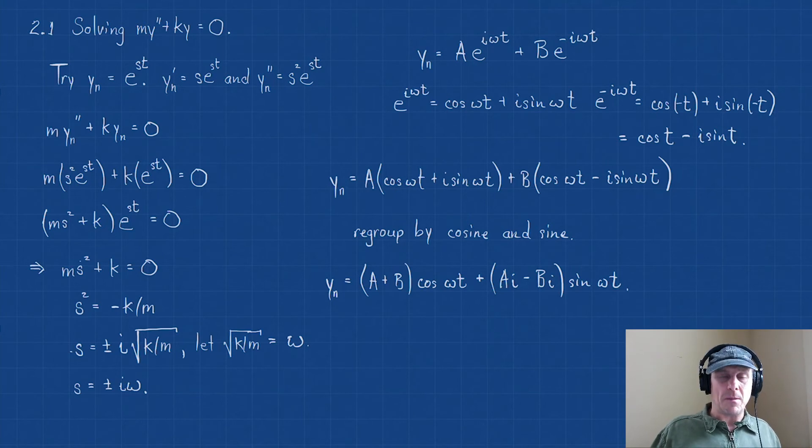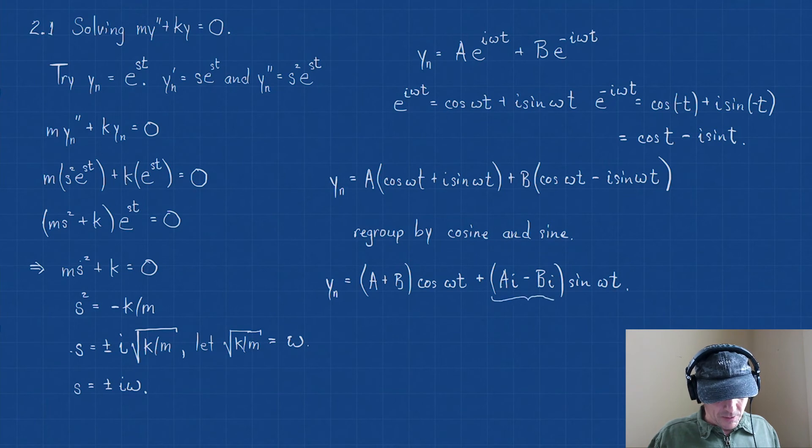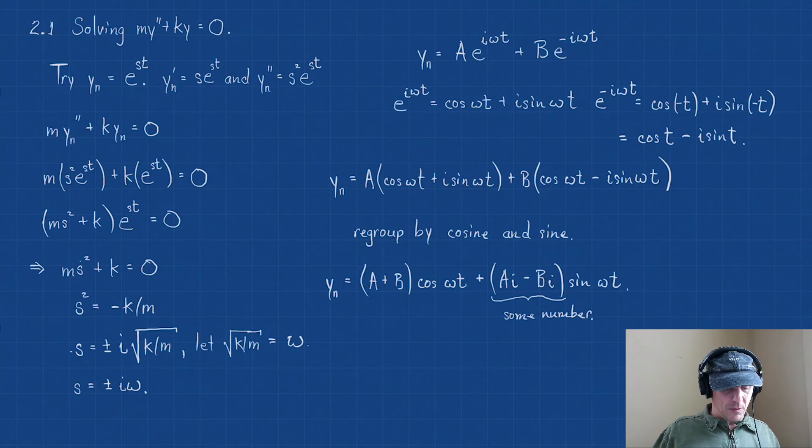Now, this may seem really strange because a + b, well, that you expect. That's just a number. But ai - bi, that's an imaginary, has an imaginary component. But here's the difficult part, but this is the step we're going to take. ai - bi, this is just, it's just some number.